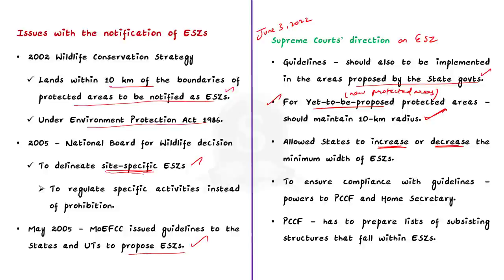If the protected area is already notified, then eco-sensitive zones can be declared to an extent of 1 kilometer from the borders of the protected area. But if a protected area is to be notified after this judgment, then the area needs to have a 10-kilometer eco-sensitive zone around it. Secondly, to ensure compliance with MoEFCC guidelines, the Supreme Court vested powers with the principal chief conservator of forests and the home secretary to the state. The court directed the principal chief conservator of forests to prepare lists of subsisting structures that fall within eco-sensitive zones, to understand the extent of human activity carried out in such areas.